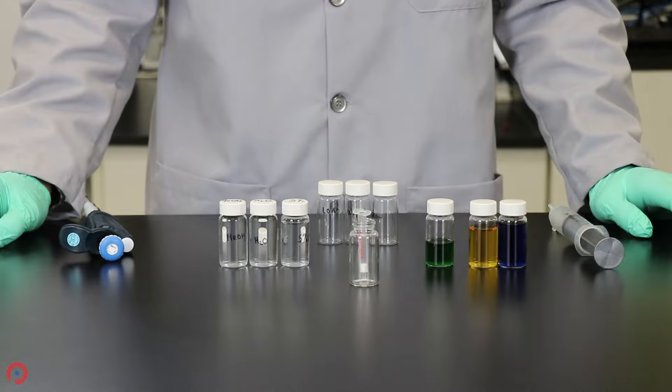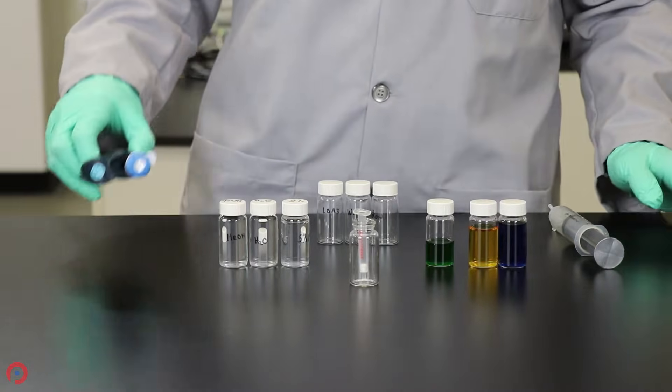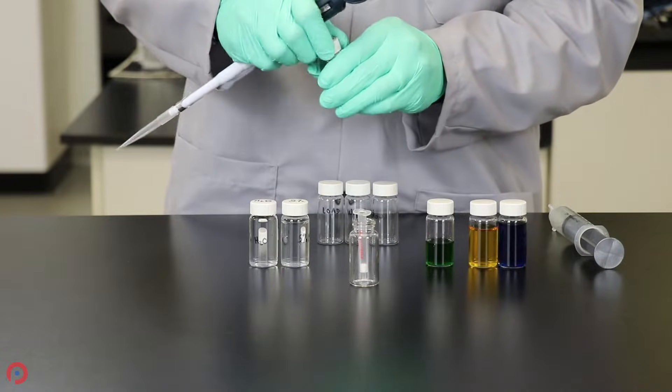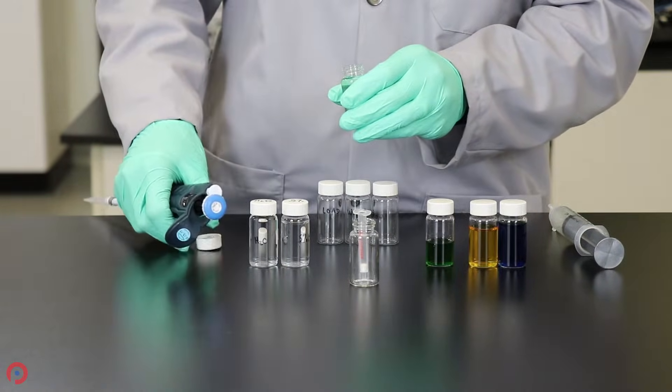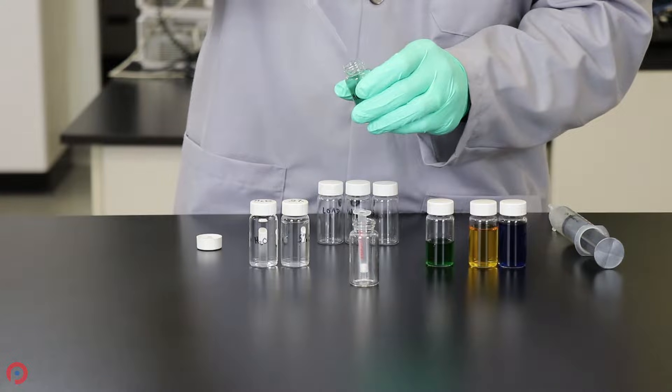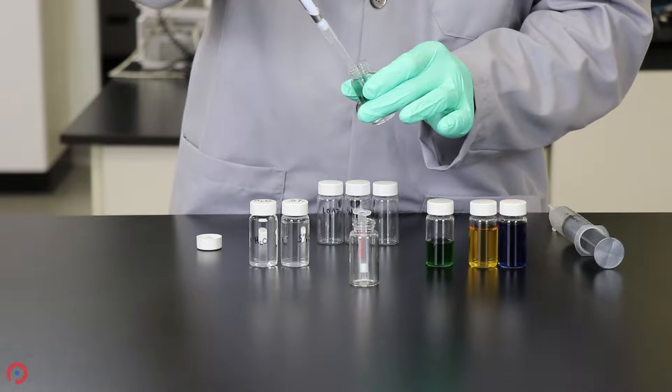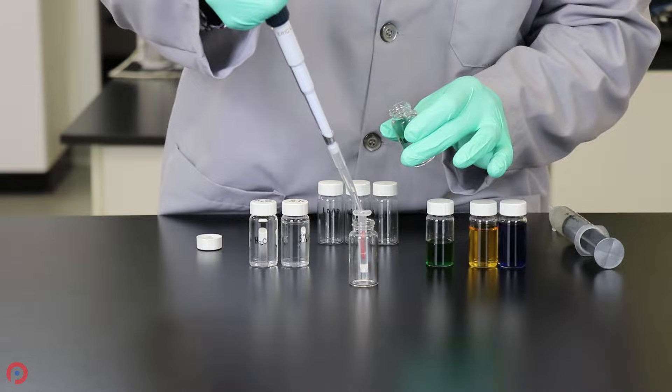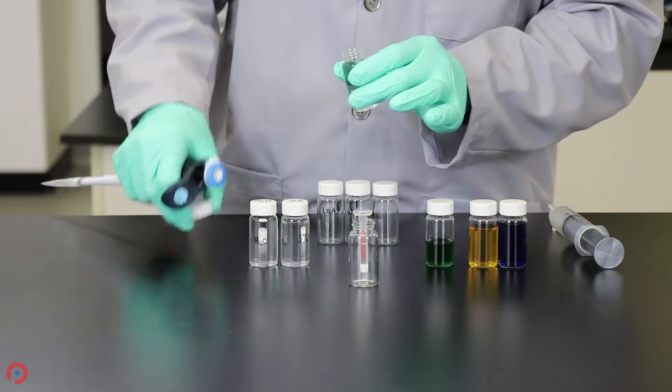Okay, so this is the infamous SPE dye demo. We're going to start off by conditioning our solvent with a strong organic solvent. In this particular case, it'll be methanol. For this particular bed mass of SPE cartridge, which is a C18 cartridge, I'm going to condition with 600 microliters of methanol. So, I'm going to load it onto the cartridge.